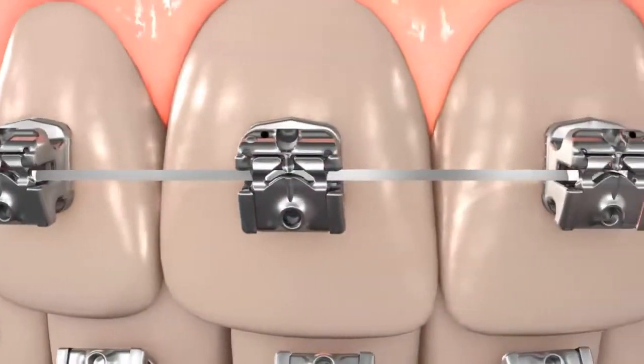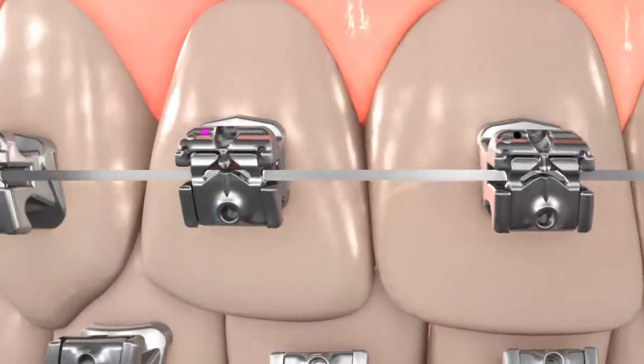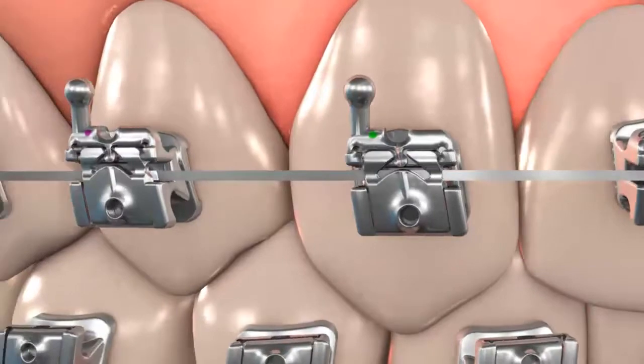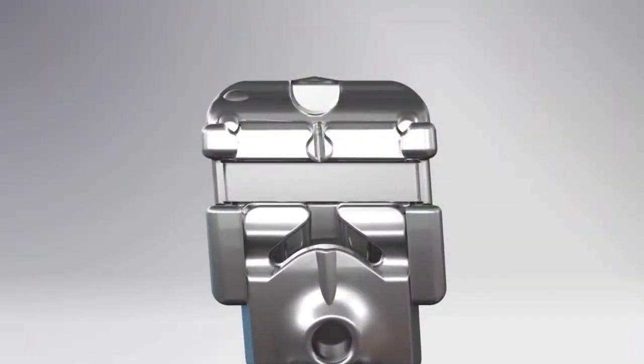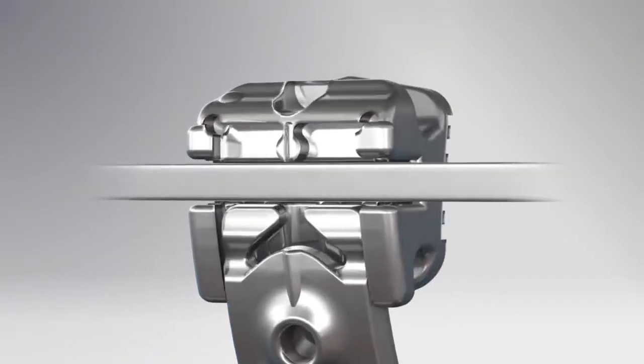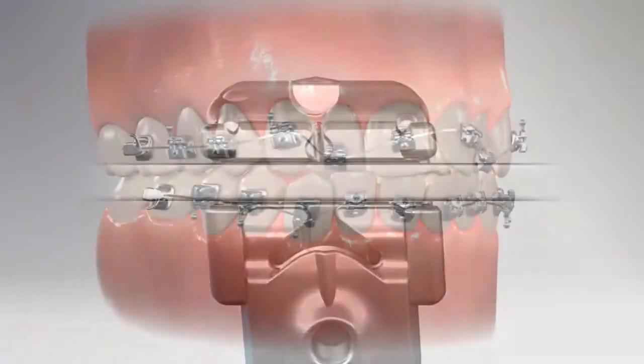This allows you to choose to have cuspids and bicuspids with secured, built-in hooks, eliminating the need for expensive, hard-to-handle drop-in hooks. All Carrier SLX brackets open towards the incisal edge, occlusal plane, away from the tissue. This avoids gingival impingement, especially on lower posteriors.